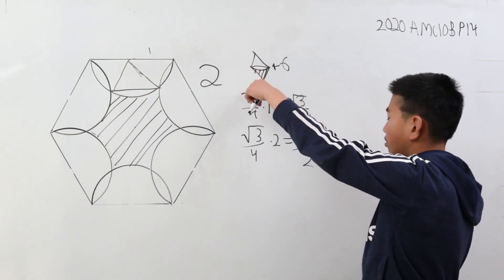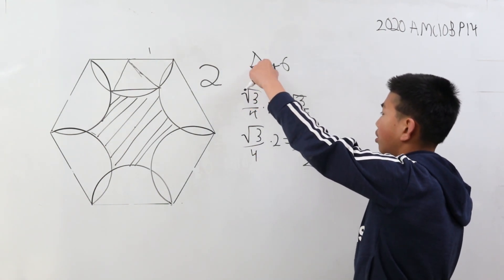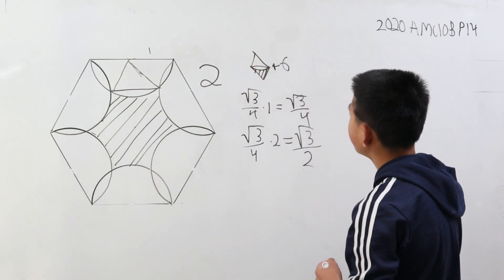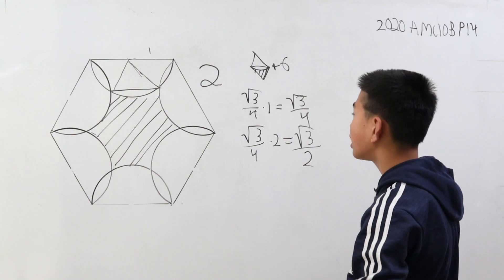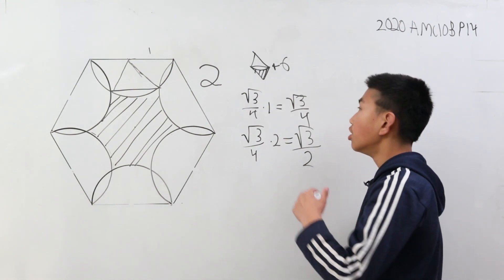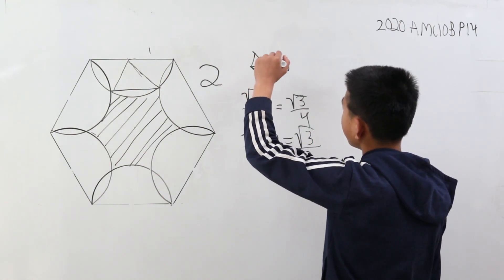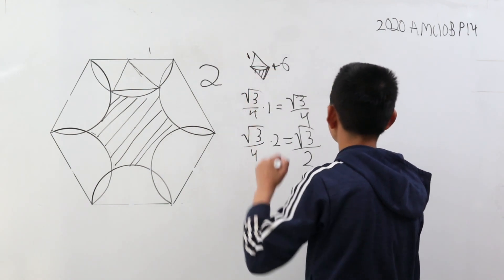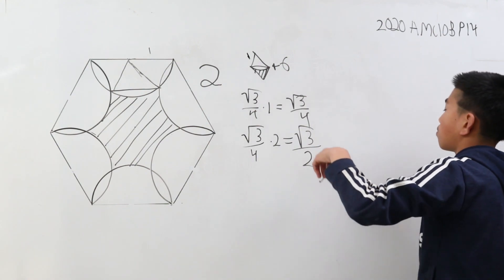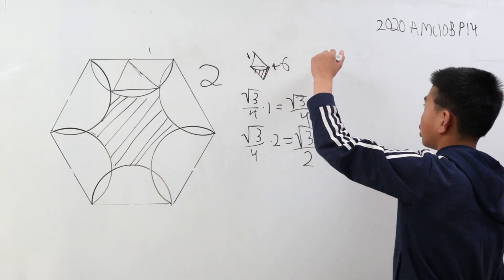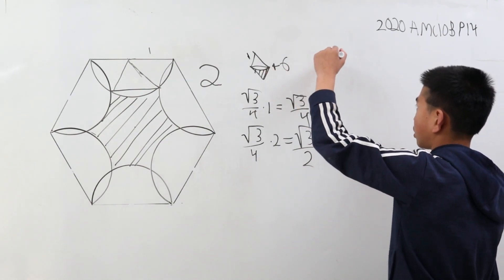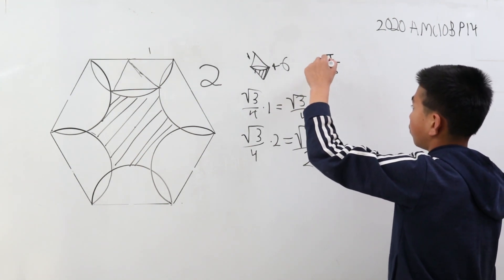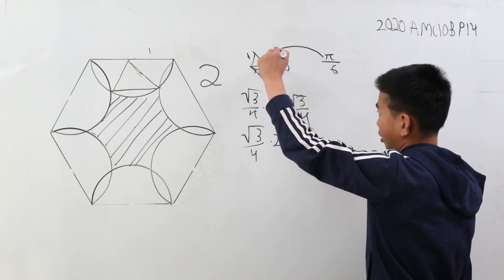We have this total area, we want to subtract whatever this unshaded region is. We can see that this unshaded region, you need exactly six of these to make a perfect circle with radius one. So this is one-sixth of a circle with radius one, so this is just pi over six.